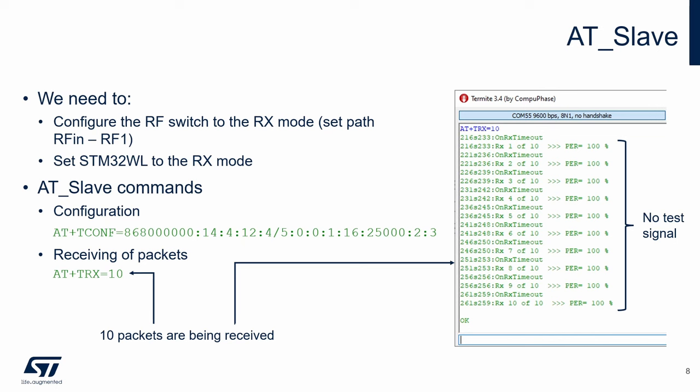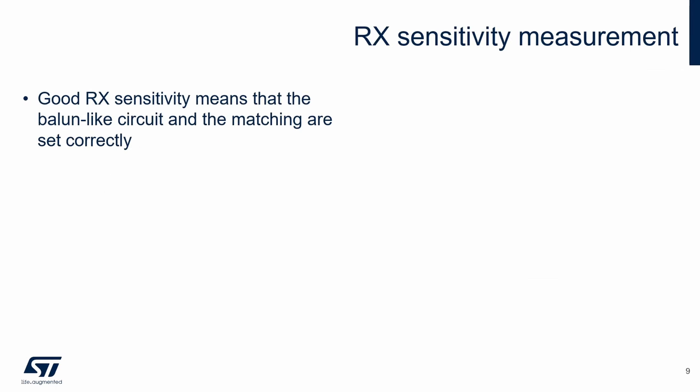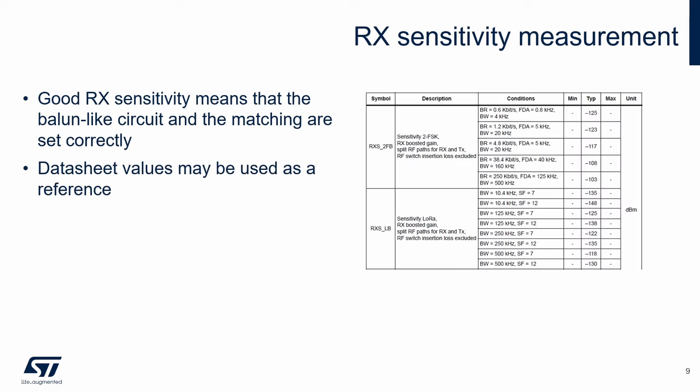Here is an example of this command. Ten packets were being received, and there was no test signal on the SMA, so the calculated packet error rate is 100%. The most important measurement is the receiver sensitivity measurement. Good receiver sensitivity means that the balun-like circuit and the matching are set correctly. The receiver sensitivity depends on the modulation and its parameters, and the datasheet specifies some sensitivities which can be used as references for our measurements.